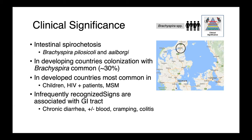People can also be infected with Brachyspira, and the disease in humans is known as intestinal spirochetosis. It has classically been associated with Brachyspira pelosicoli and Brachyspira aalborgi — named after Aalborg, Denmark, where it was discovered. In developing countries, colonization is quite common, up to 30% of the population. In developed countries, it's most commonly seen in children, HIV-positive patients, and men who have sex with men. Signs include chronic diarrhea with or without blood, cramping, and colitis.